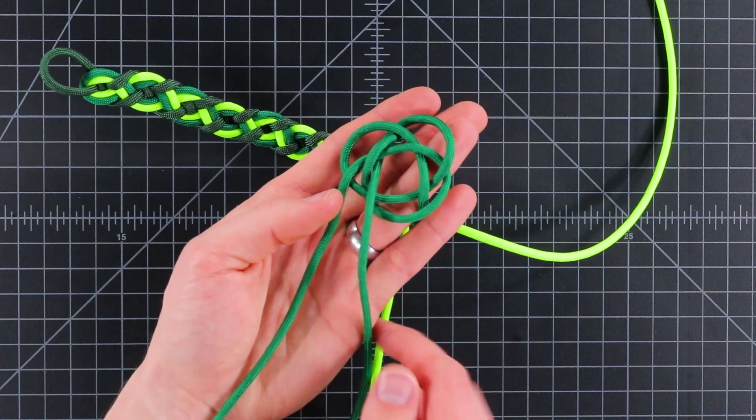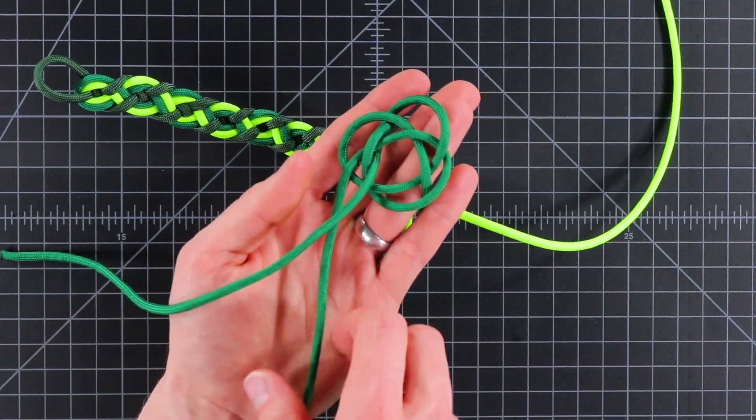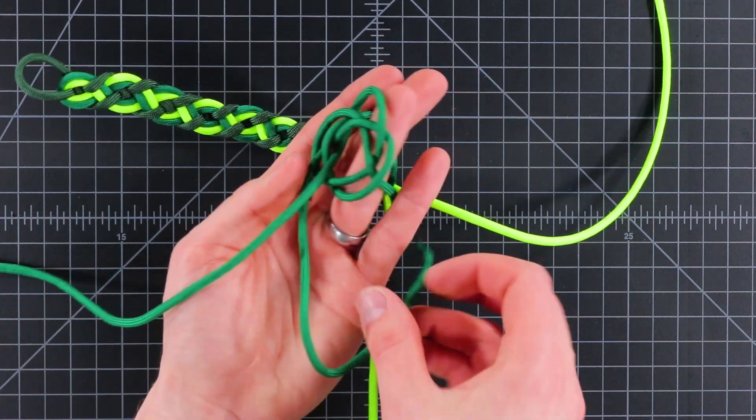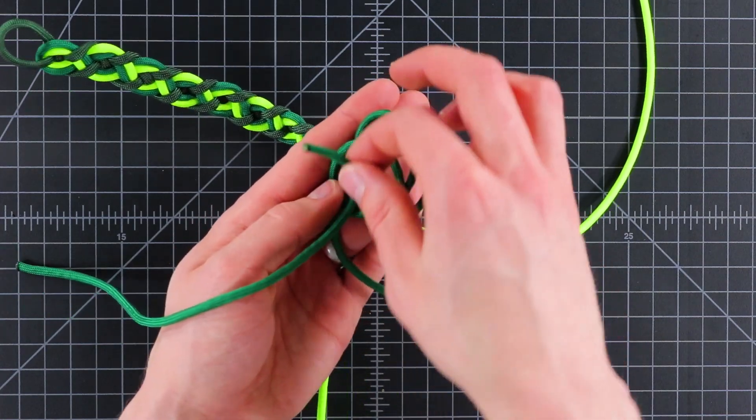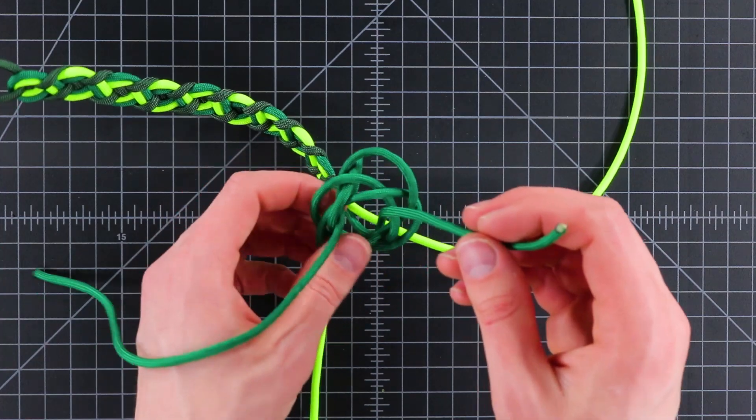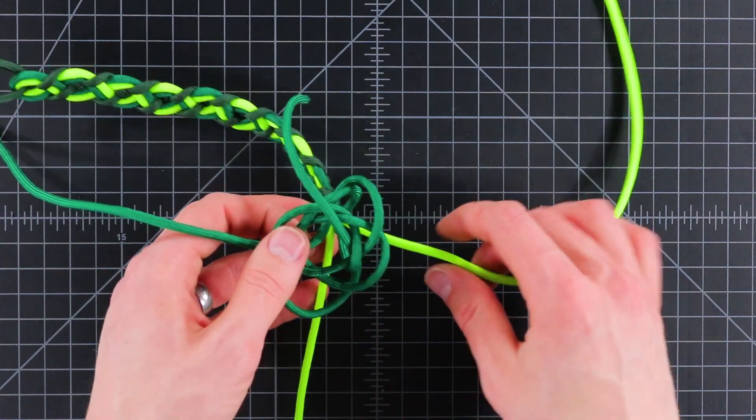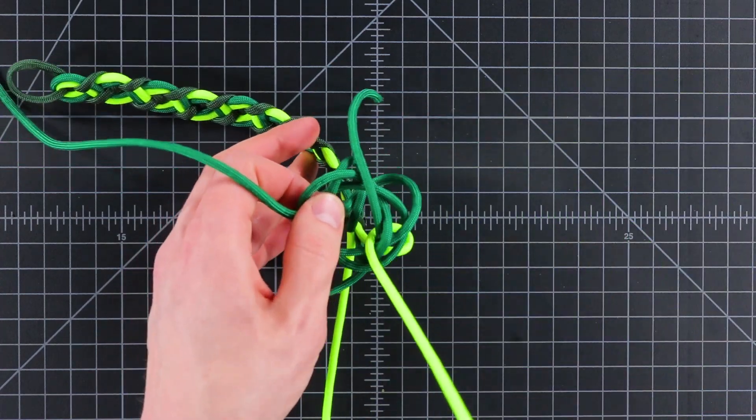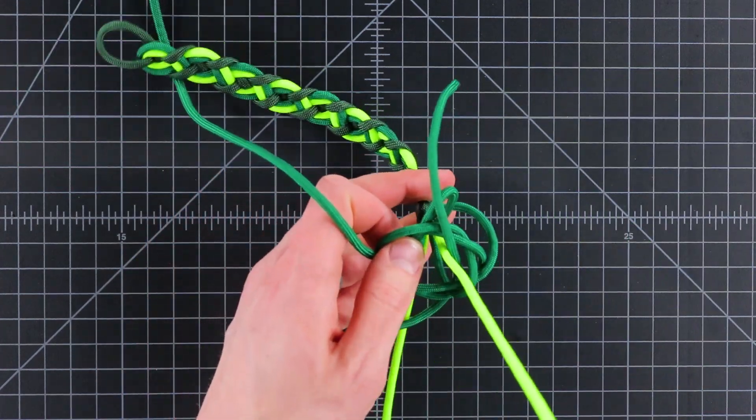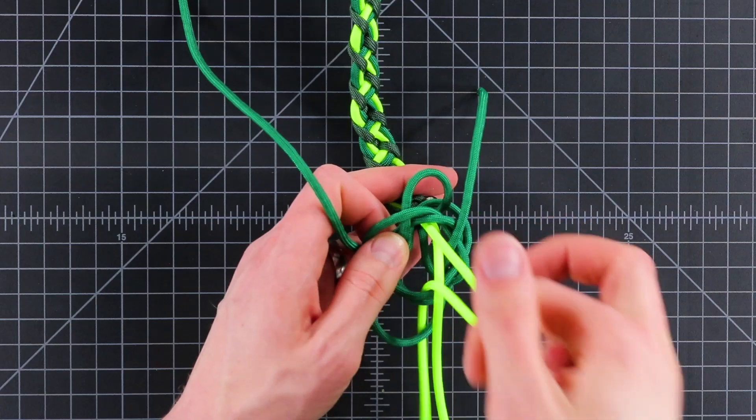And the same with this one. This one's still pointing up. Just go underneath that one. Around this other base cord and up through the middle. And then before you pull that tight, we're just going to stick both of those neon green cords up through the middle. And tie the knot around that.